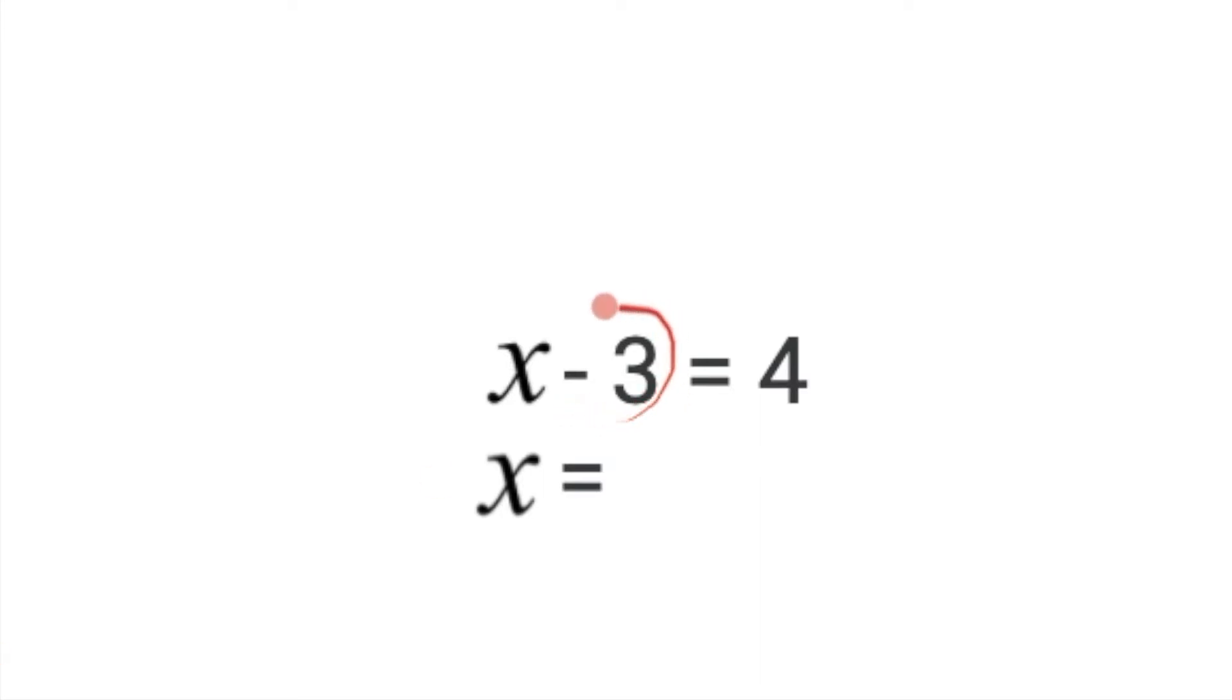Now we have to deal with this negative 3. Similar to solving addition problems, we can move this 3 over to the other side. But because the subtraction symbol is in front of the 3, this isn't actually a 3, it's a negative 3.